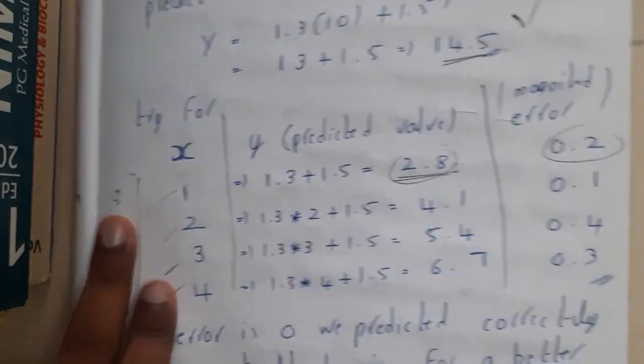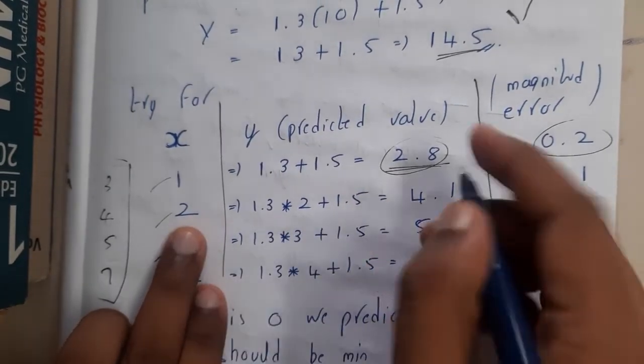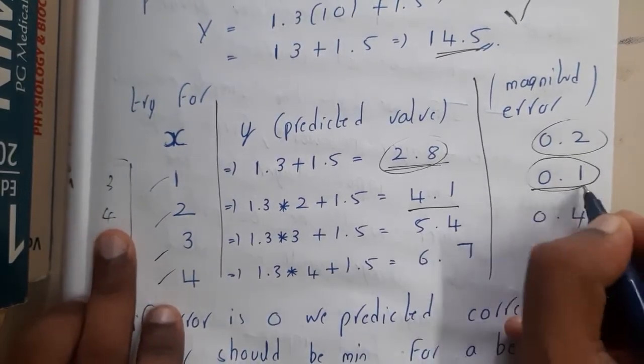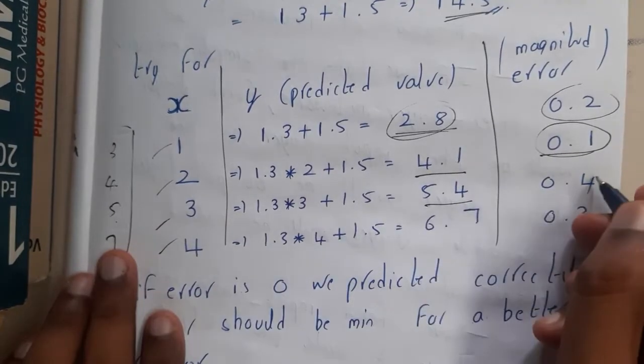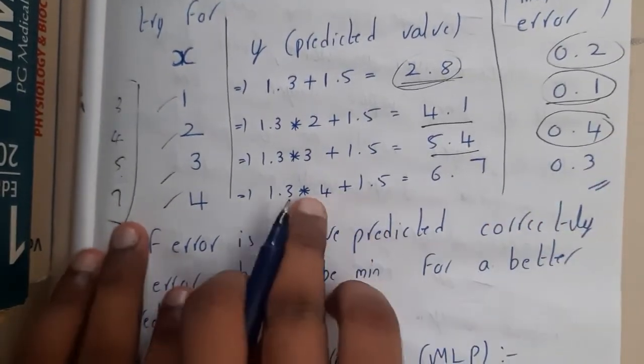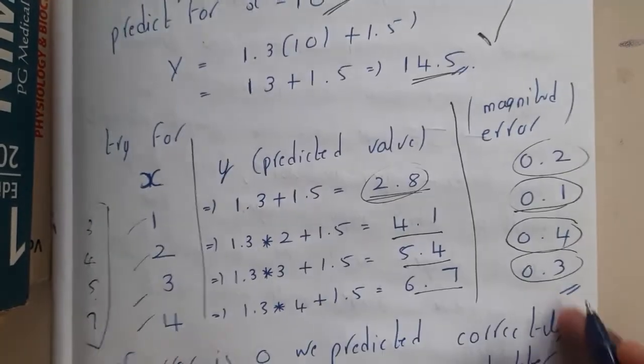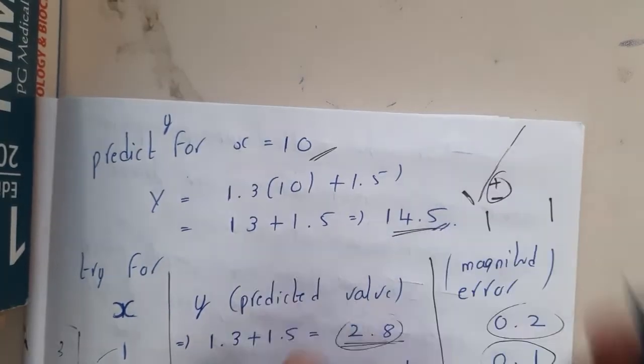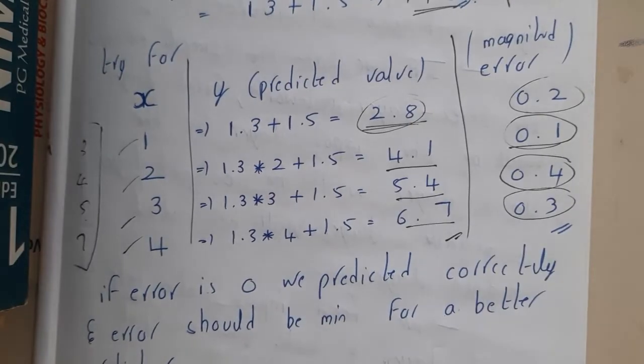Similarly, once I substituted 2, I got 4.1 but our original value is 4, so we got 0.1 error. Similarly for 3, I got 5.4 but our value is 5 only, so we got 0.4 error. Similarly for 4, it is 6.7 but our original value is 7, so we got 0.3 error. Basically magnitude error means I am making it mod, I am not specifying plus and minuses here. We are having some error, so we cannot say that this prediction is 100% accurate. Never think in that way.